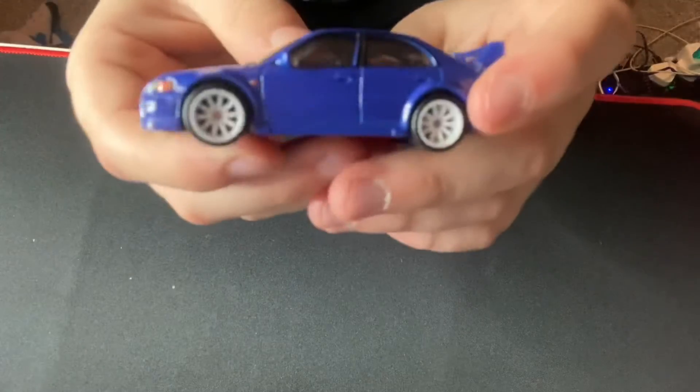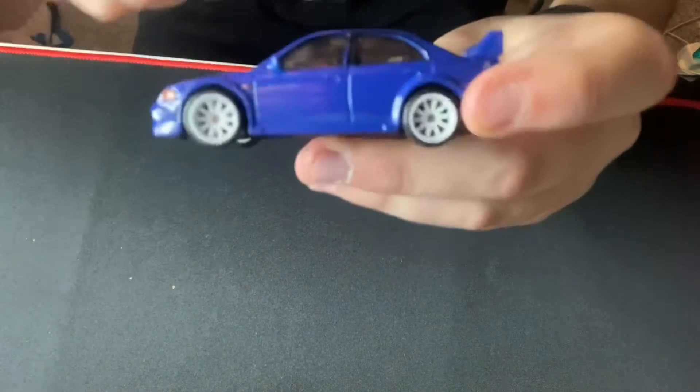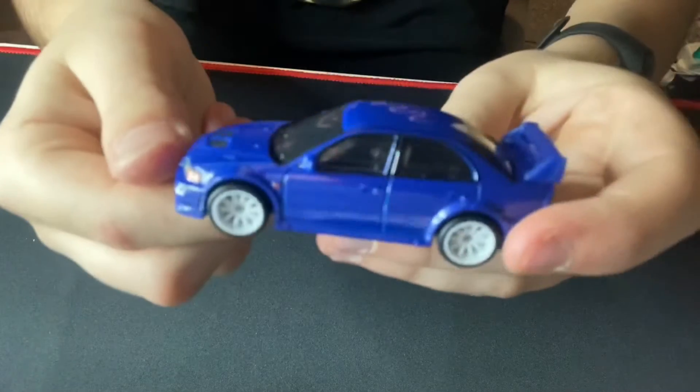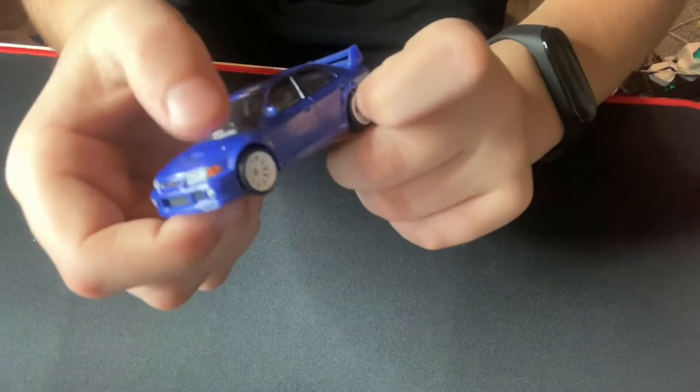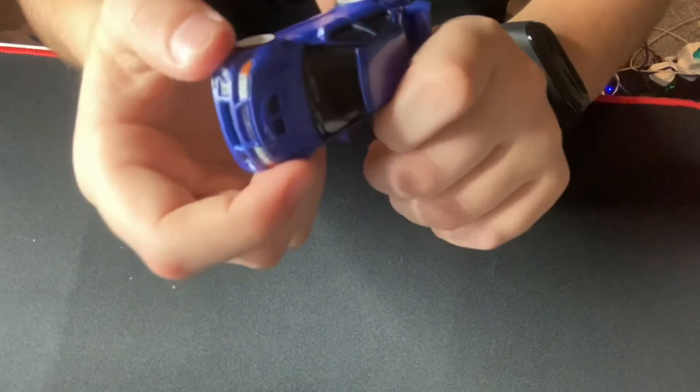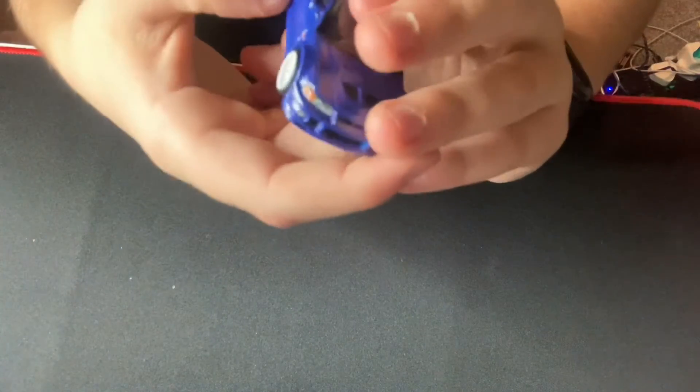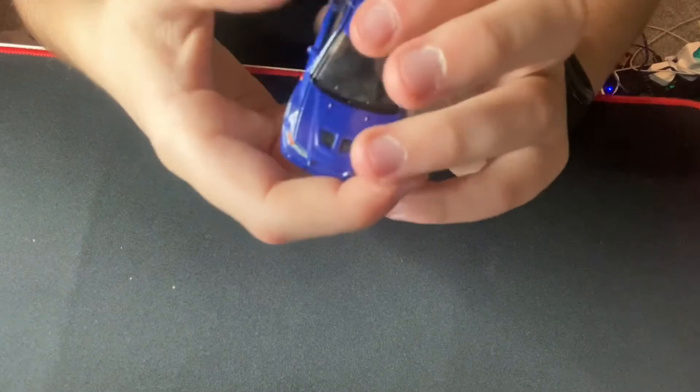And also for detail it's got a roll cage in, which you probably can't see. You can just see it on the side bit there. It's also got the little engine vents, side lights, which I really like.